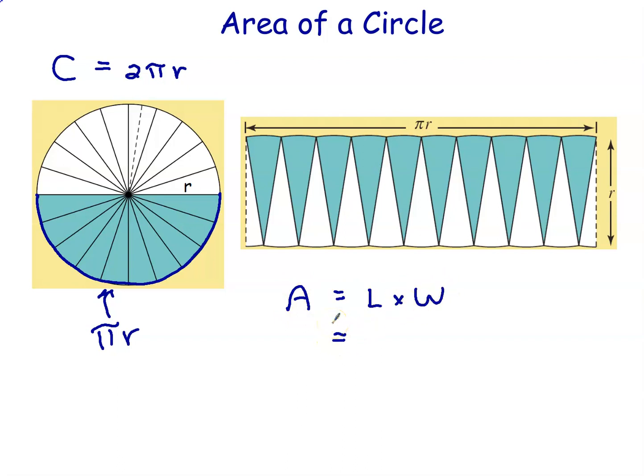Now, in this case, the length of that, we've already discovered that, that's just pi r. And the width of the rectangle, well, that's just that distance just there, the radius. So area equals pi times r times r. And that gives me pi times r squared.